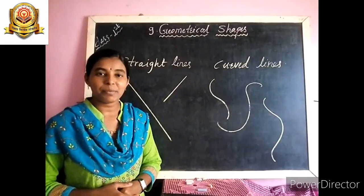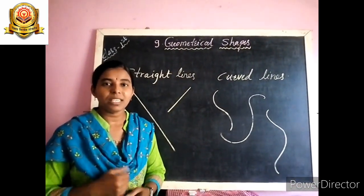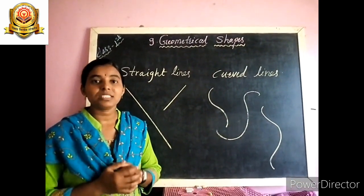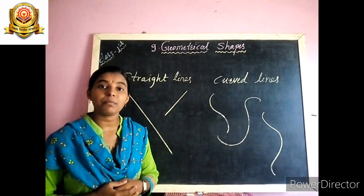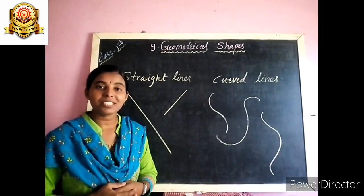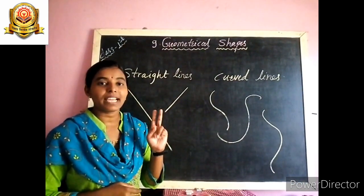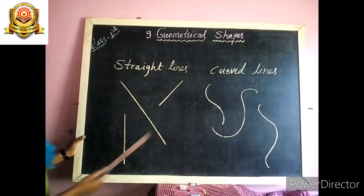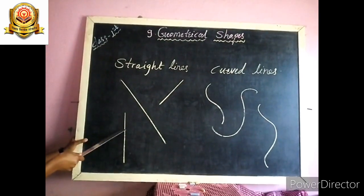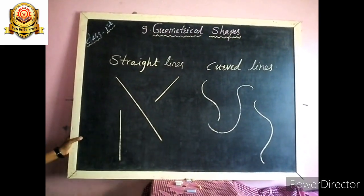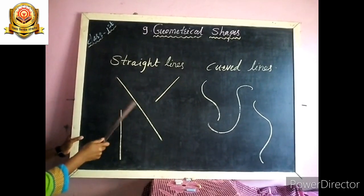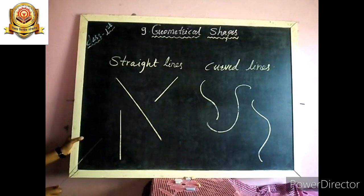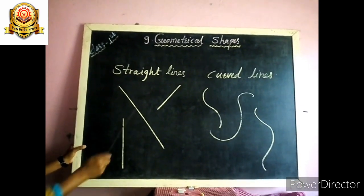Before we start about shapes, we will see one important thing — lines. Each and every shape is made up of lines. There are two types of lines: straight lines and curved lines. We can draw straight lines by using a scale, but we cannot draw curved lines by using a scale.